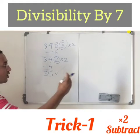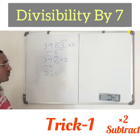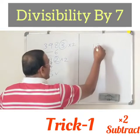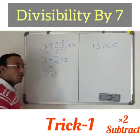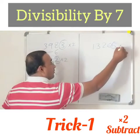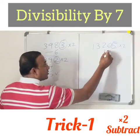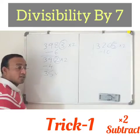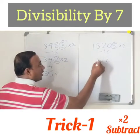Let us take one more example and check trick 1. I am taking 13265. So what do we do? Take the last digit — 5 — multiply with 2. What do we get? 10. That is separate from the remaining digits. Then we get 1, 3, 2, 6, and subtract 1, giving us 1261.